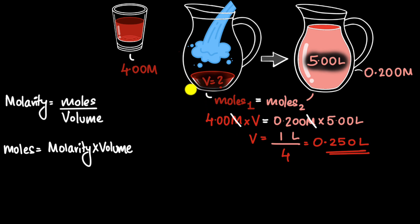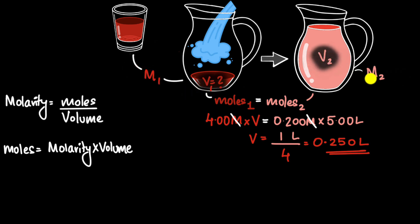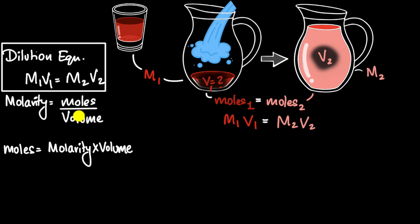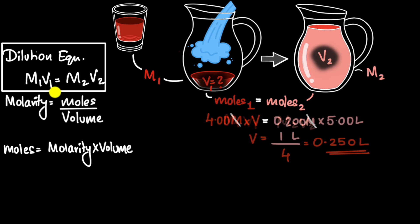We can generalize this. If the concentrated solution has molarity M1 and volume V1, and the dilute solution has molarity M2 and volume V2, then after equating the moles we get M1V1 = M2V2. This is the dilution equation. The product of molarity and volume stays the same even after dilution, because that product represents moles of solute, and the amount of solute does not change when you dilute.